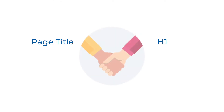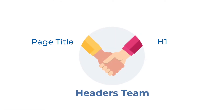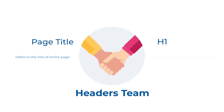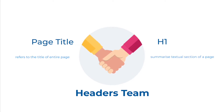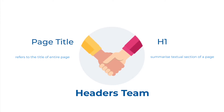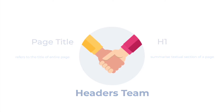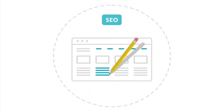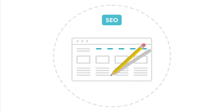Essentially, the title and H1 meta tags are both headers, but they have different purposes. The title refers to the title of the entire page, while H1 only summarizes its textual section. However, both headings have a positive effect on the conversion of a page.